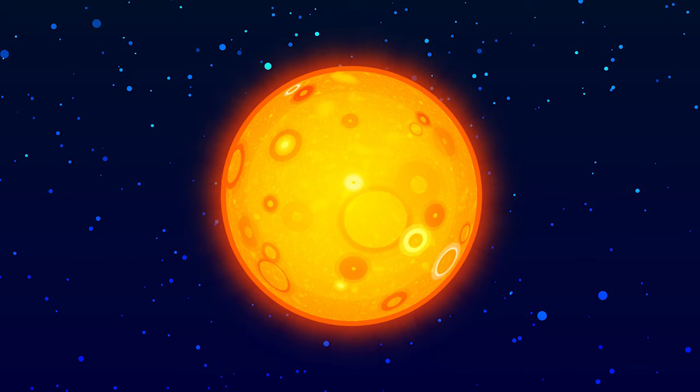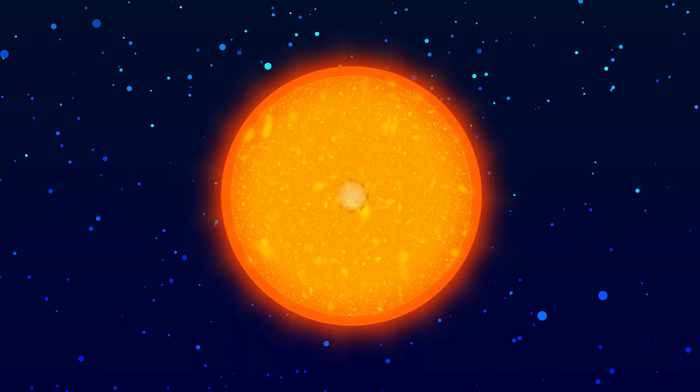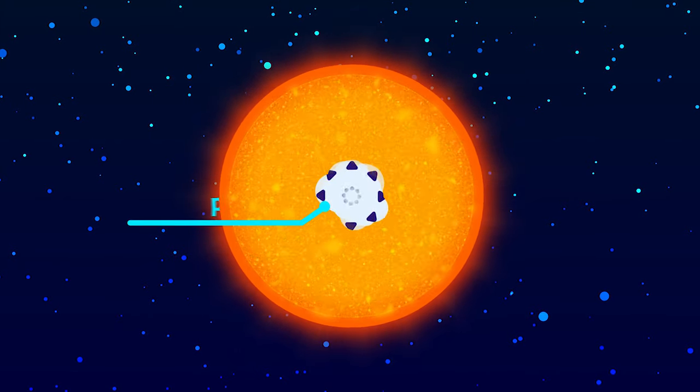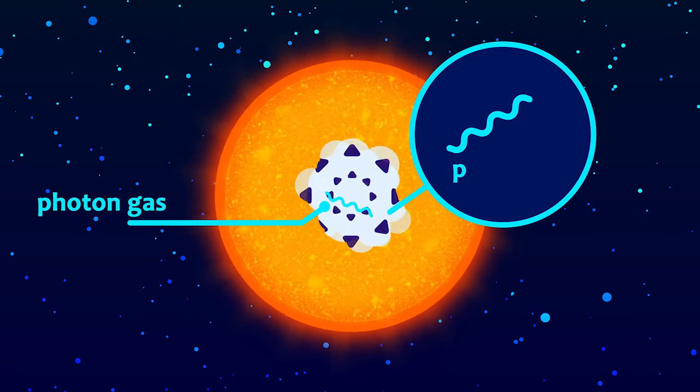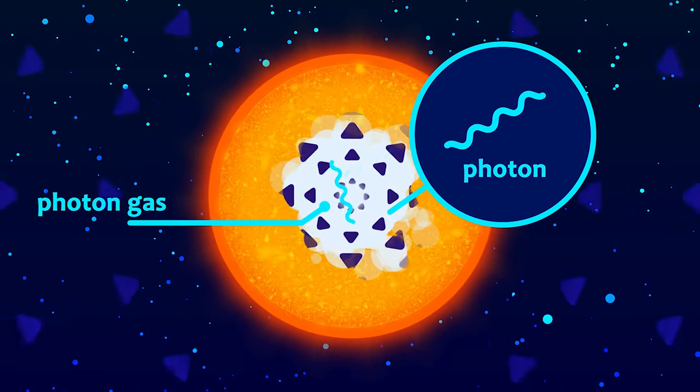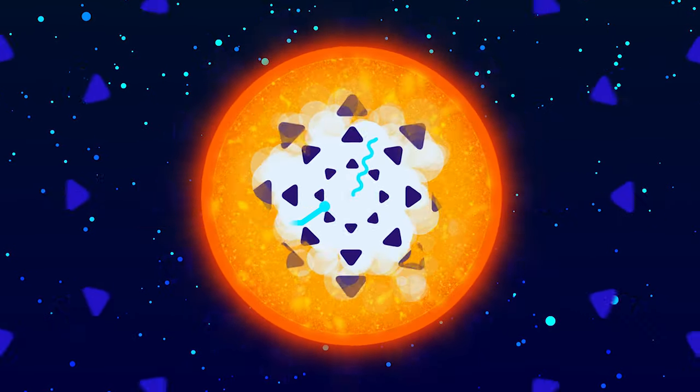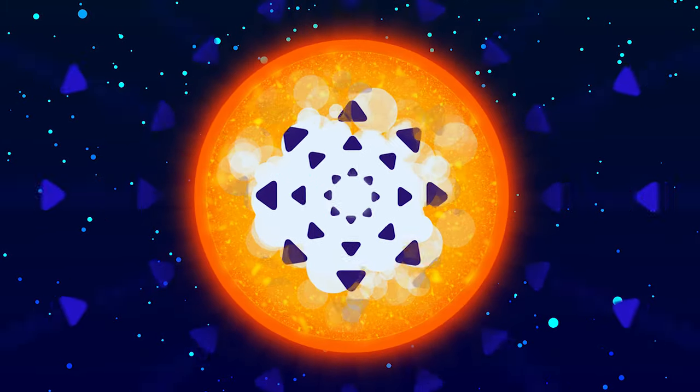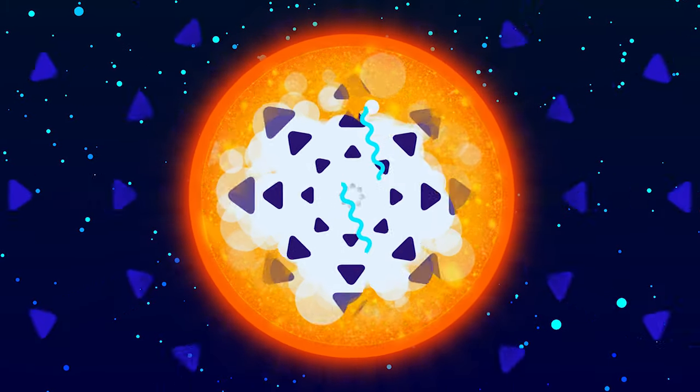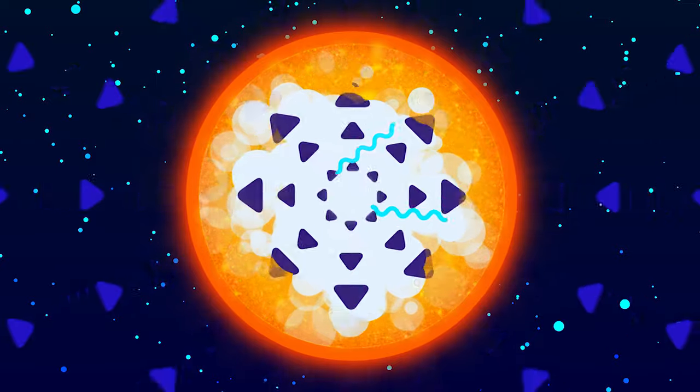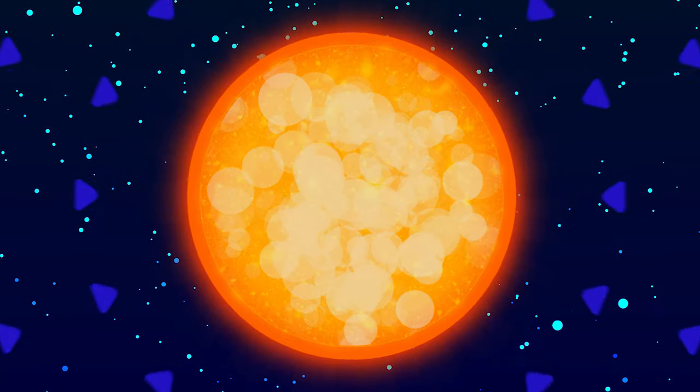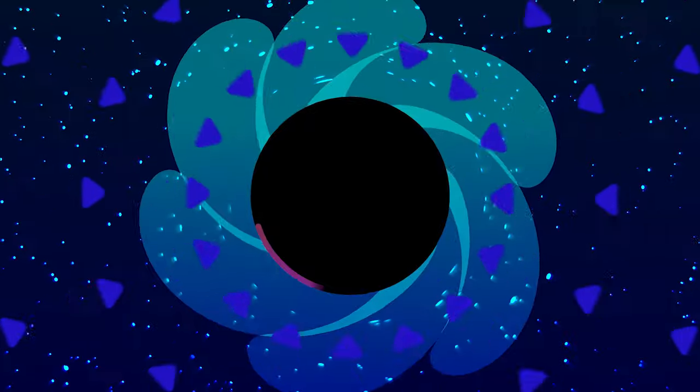As stars burn out nuclear fuel at their cores, a gas of highly energetic photons is produced. The pressure of this gas counteracts the gravitational attraction of the star, preventing it from imploding. But at some point, the star would run out of its nuclear fuel, the self-gravity would win, and the star would collapse into a black hole.